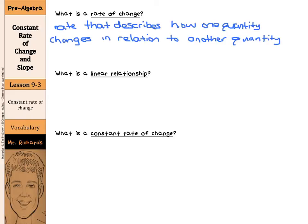And a linear relationship is a relationship that has straight-line graphs. Think linear, you can see the word line there.